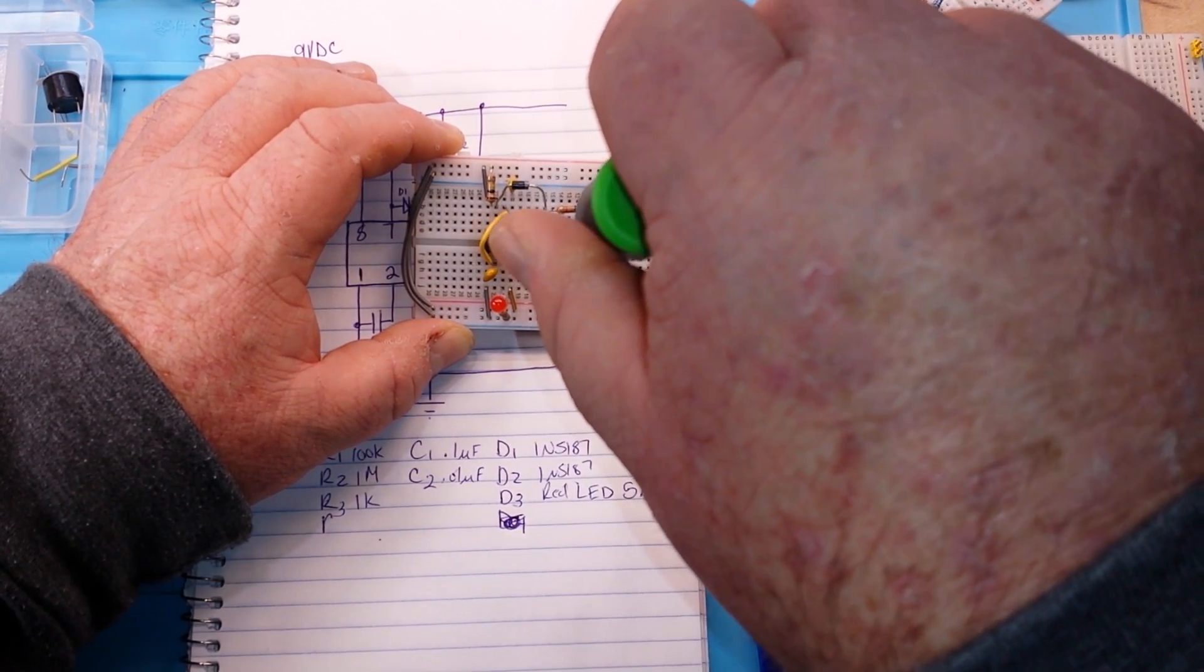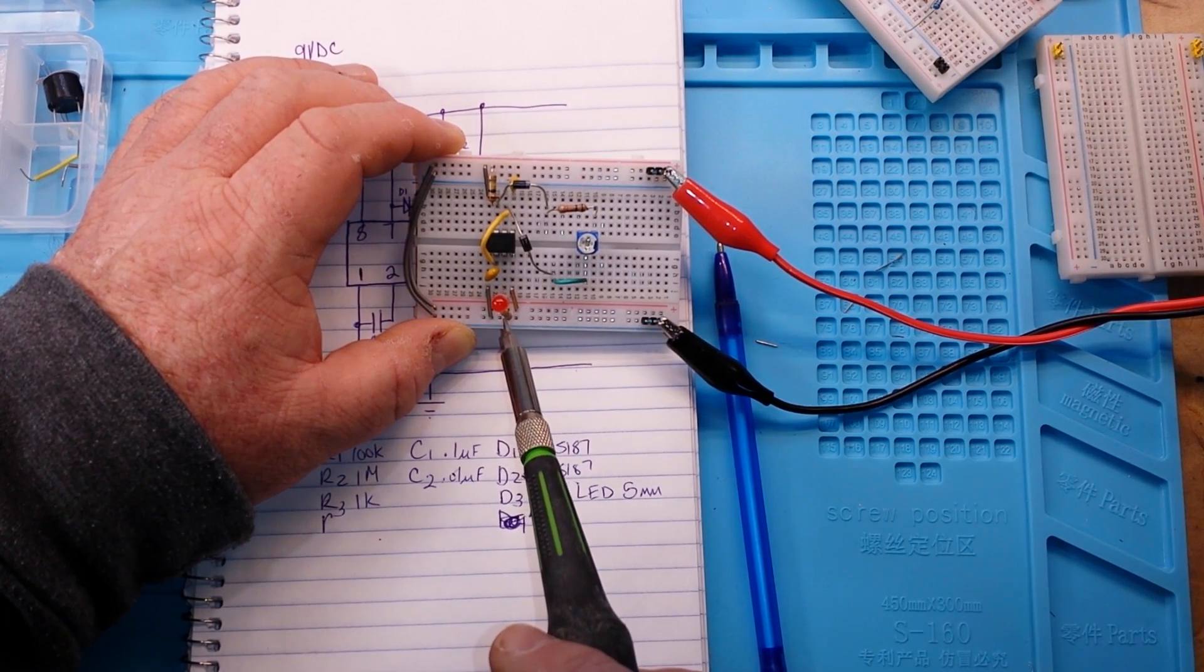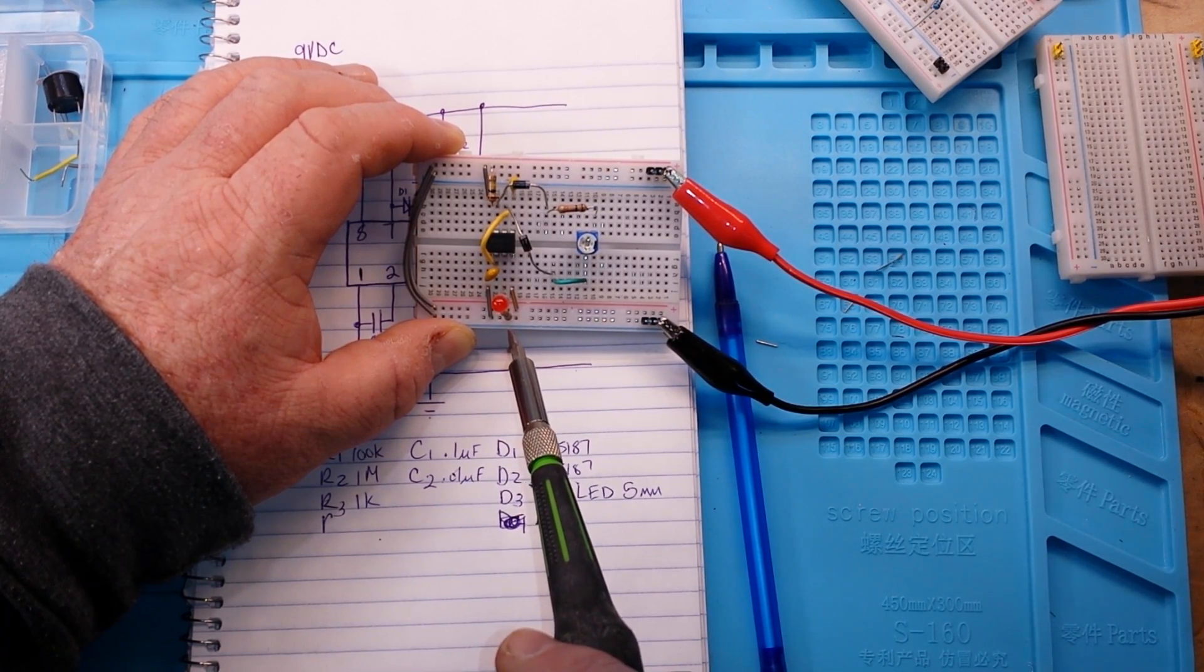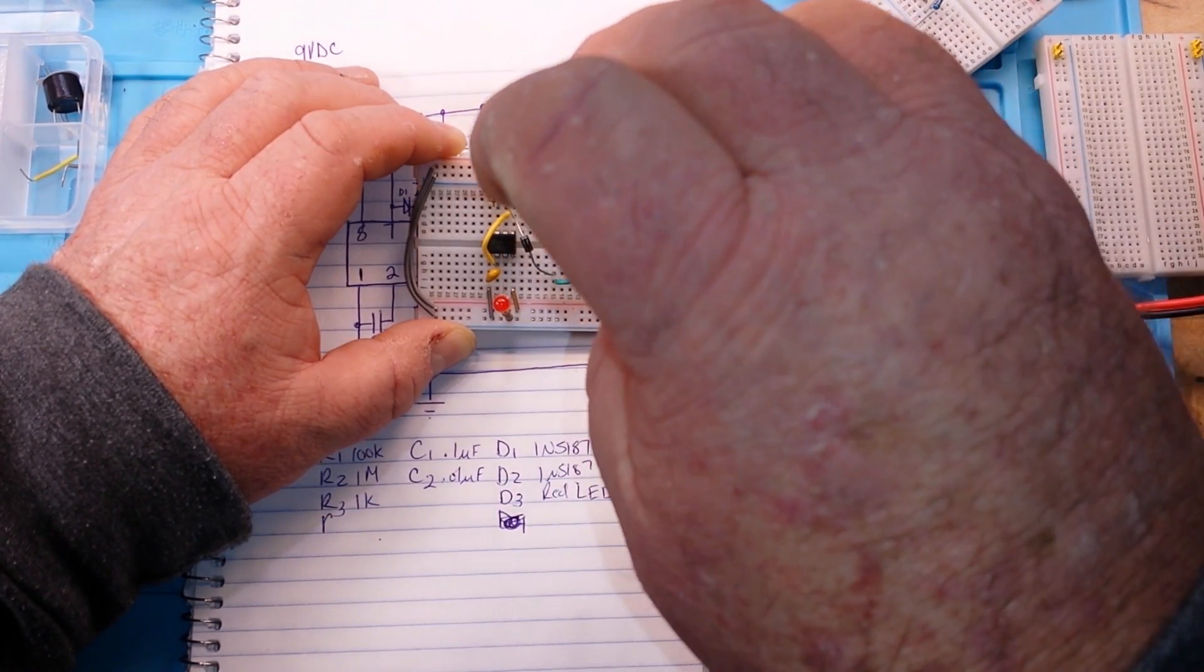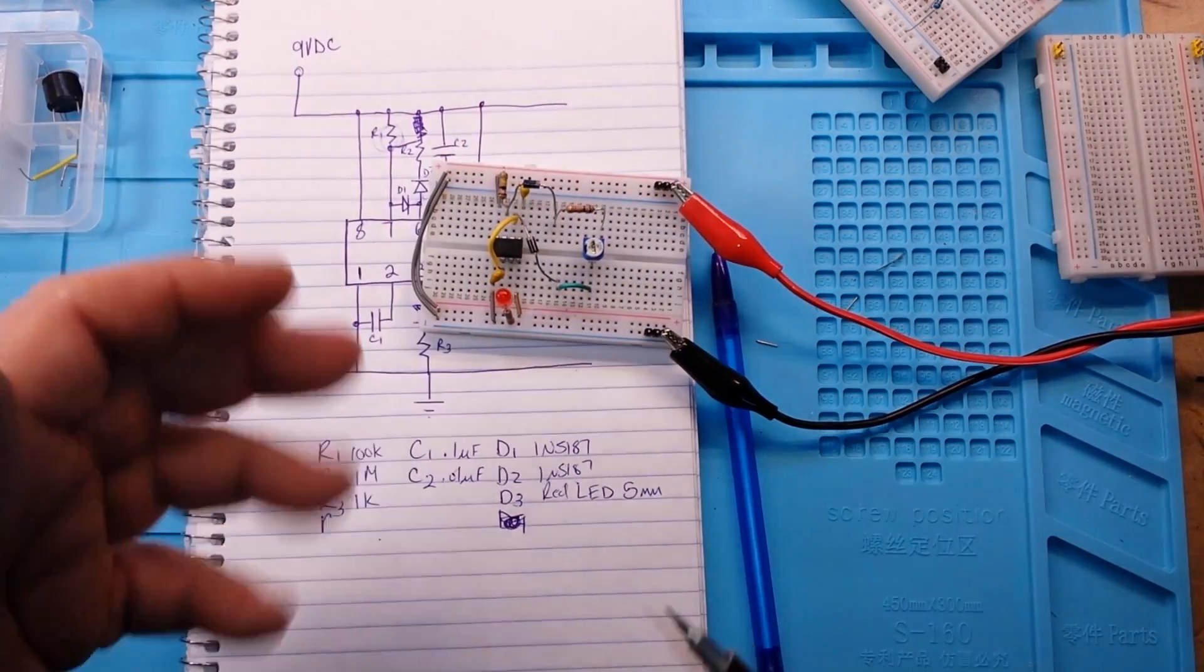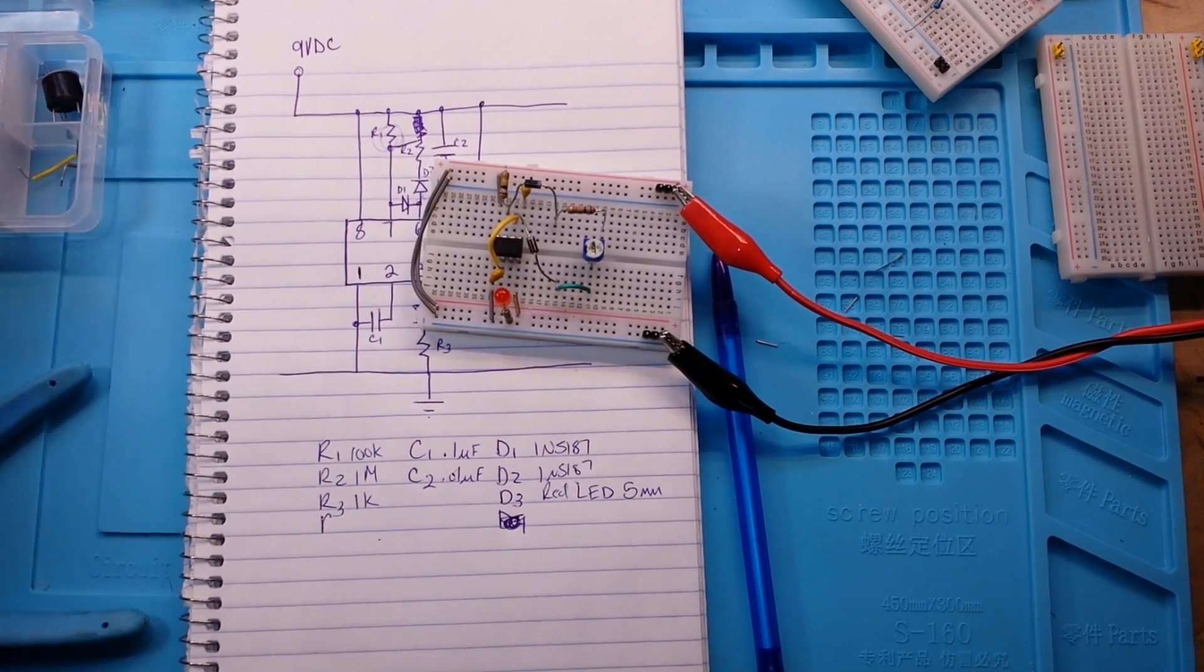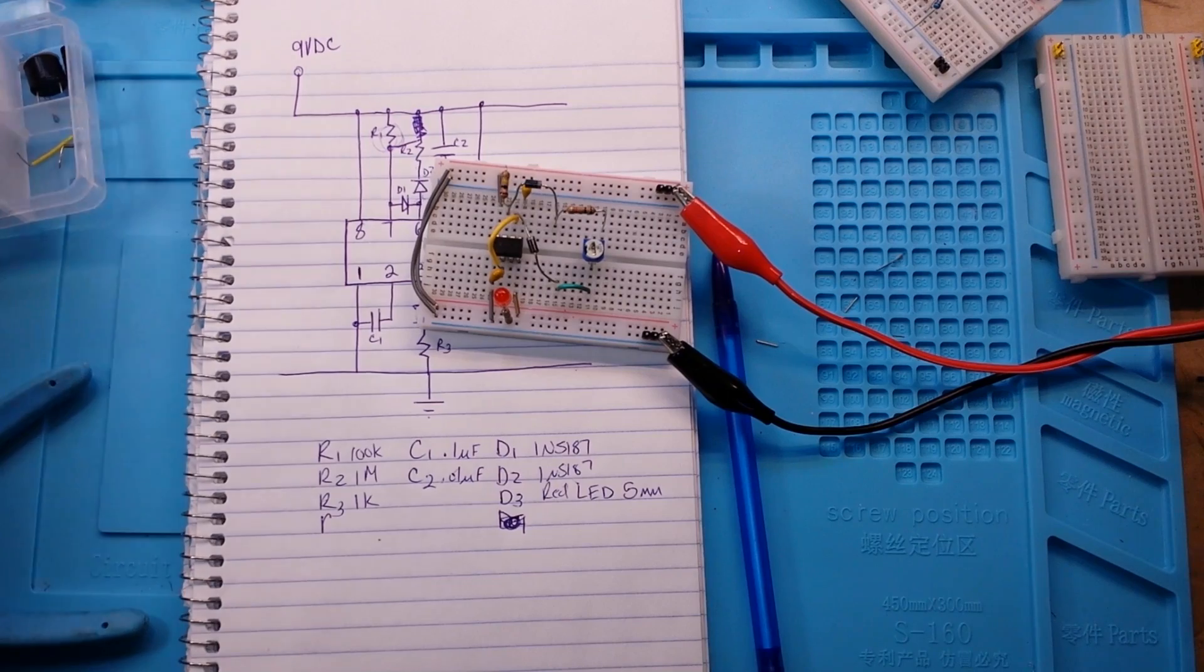Notice how long that's on compared to off. And then if we reverse it, we end up with more of a pulse generator. So yeah, you could use that to create yourself a little bit of a pulse generator.